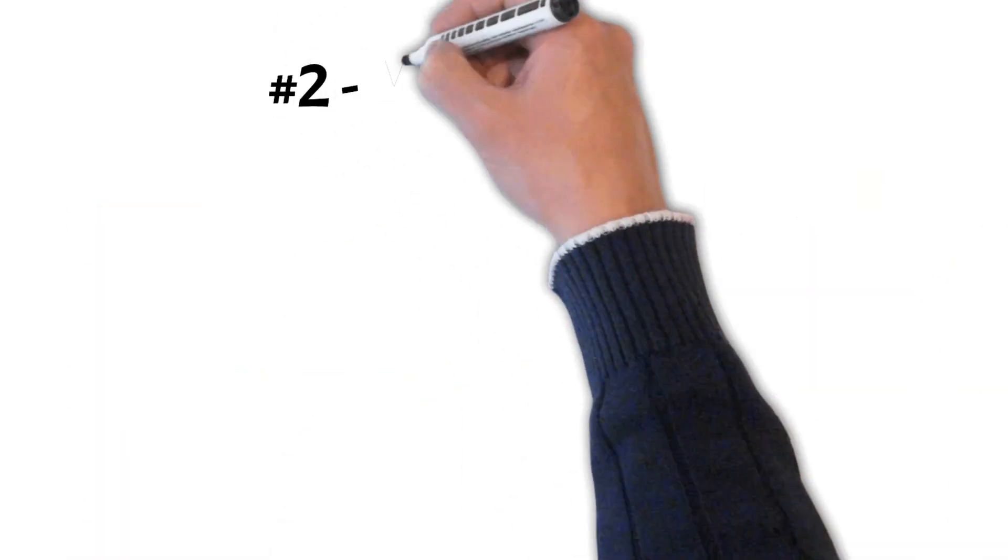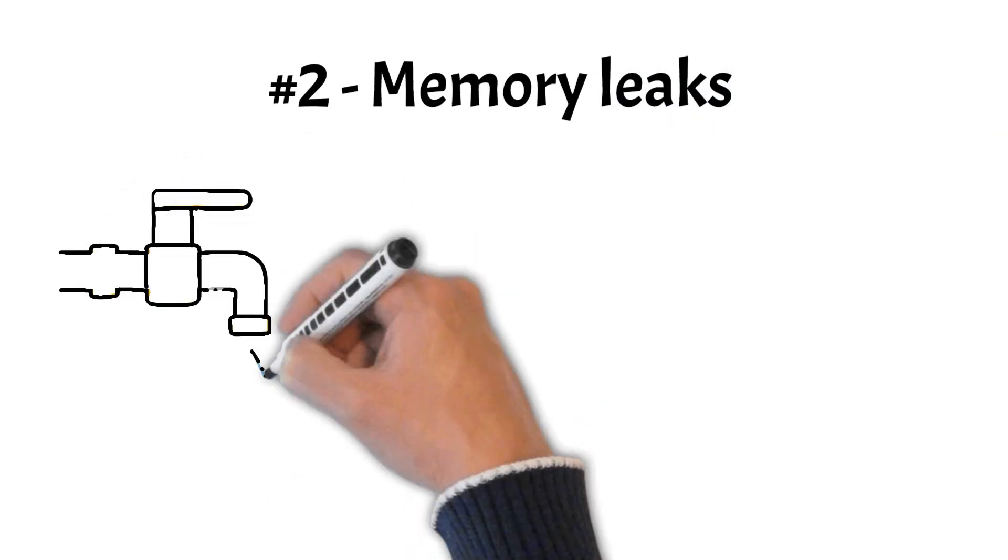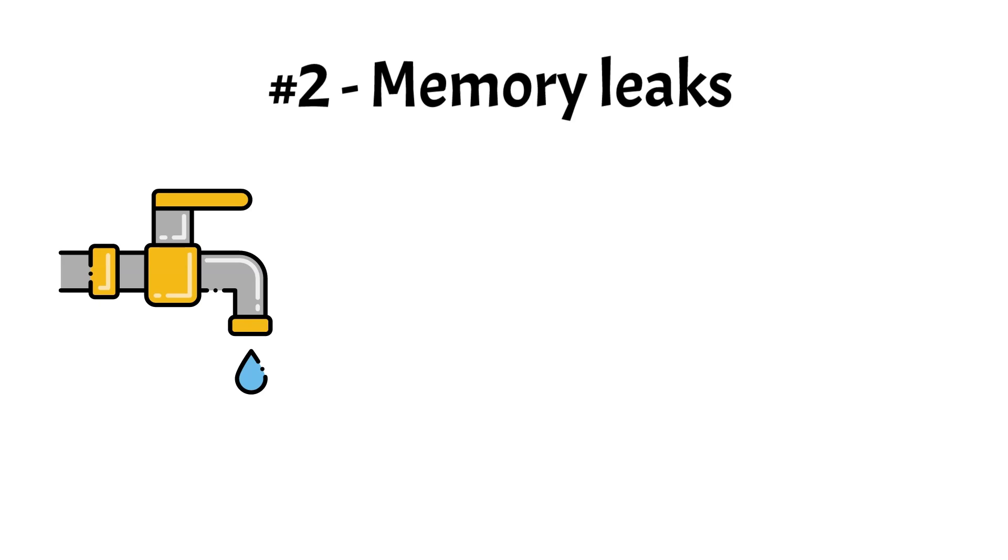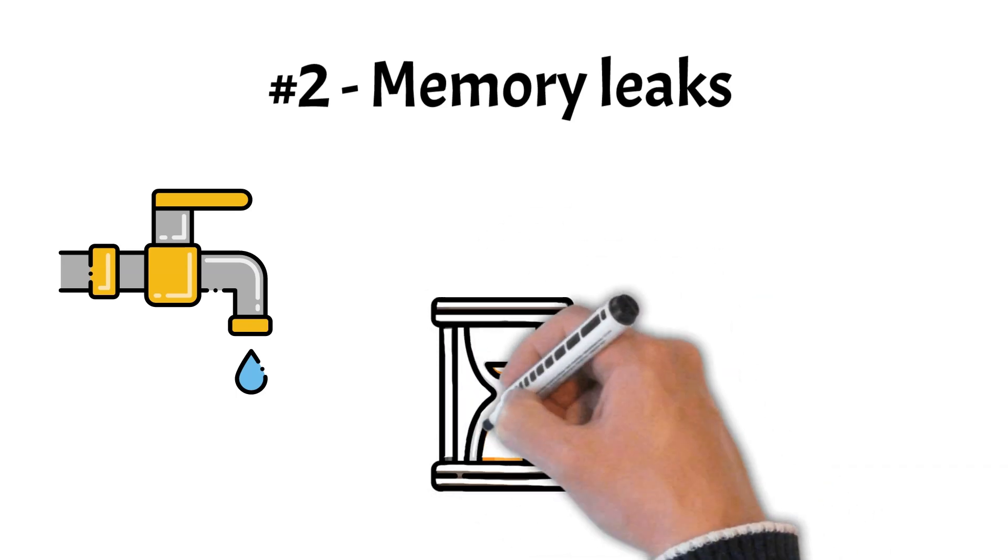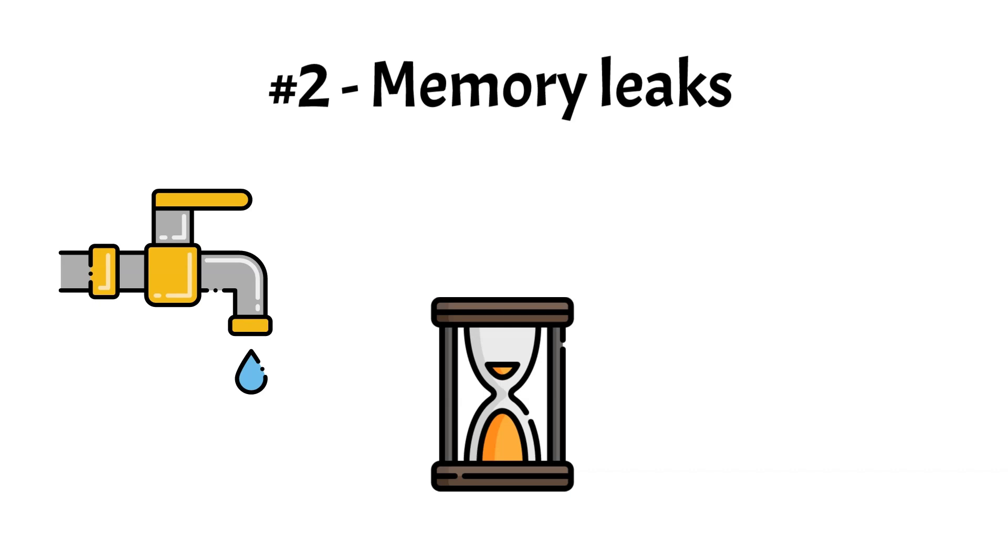2. Memory Leaks. Memory leaks occur when memory is allocated but not properly deallocated, leading to wasted resources and potential performance issues over time. This is particularly problematic in long-running programs or those that frequently allocate and deallocate memory.